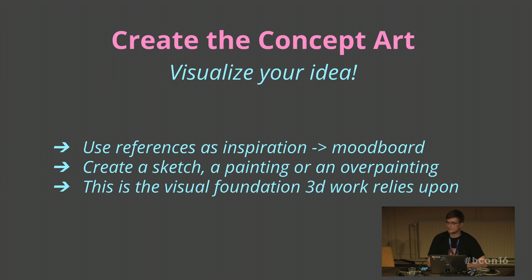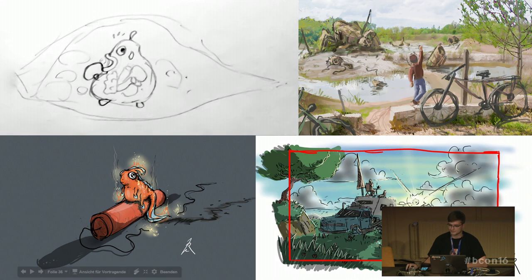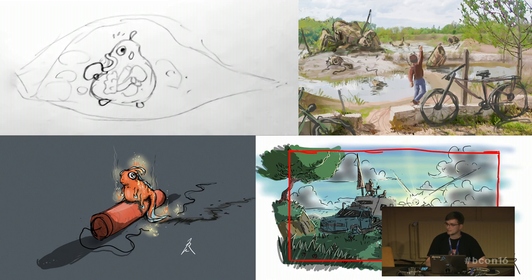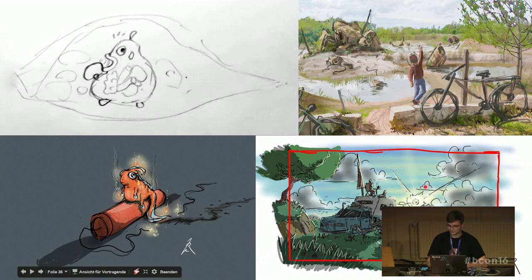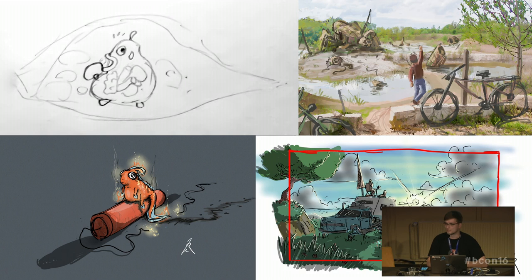Creating concept art is the next step after you have your idea — we visualize the idea, and this is very important. You can just start modeling what you have in your mind, but if you paint a little sketch or an over-painting — like taking a photo and painting on it with basic strokes — you get a better idea of what to make. I had a clear idea for the alien on TNT. For the Journey concept, I changed the environment quite a few times because I knew what car I wanted but not what environment to put it in.